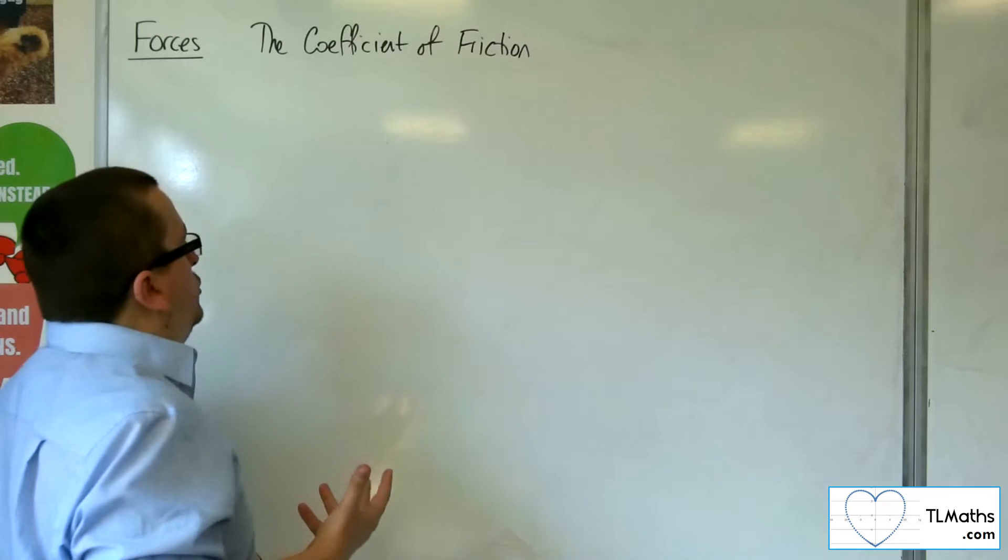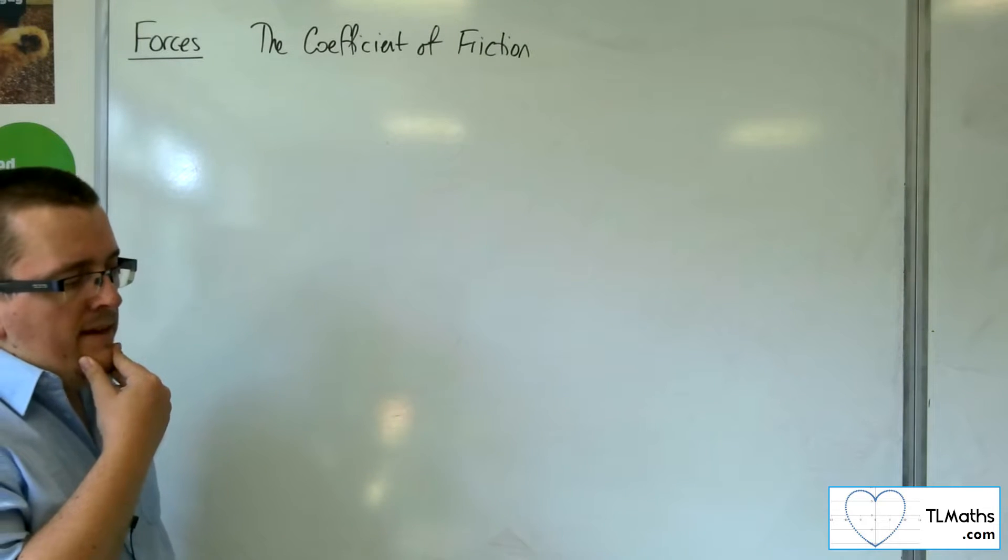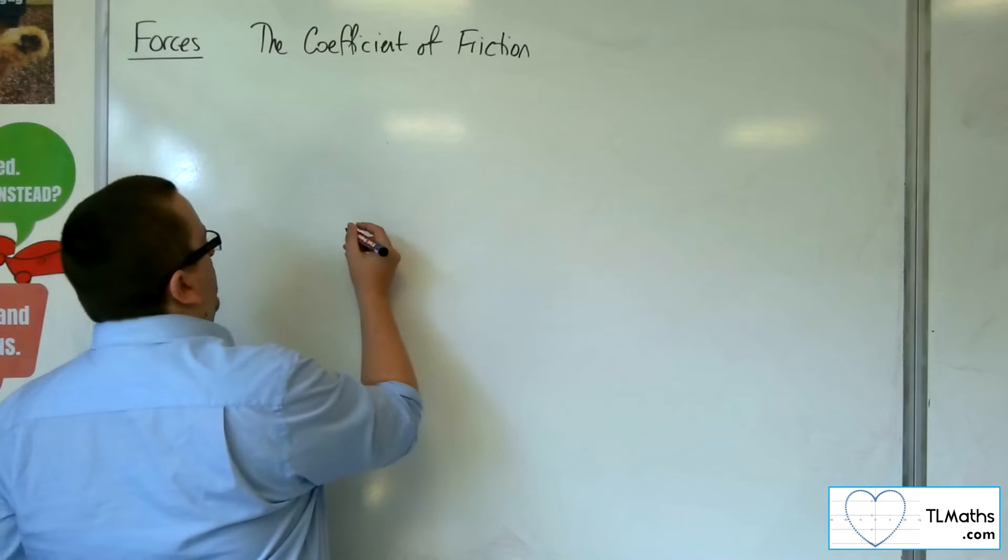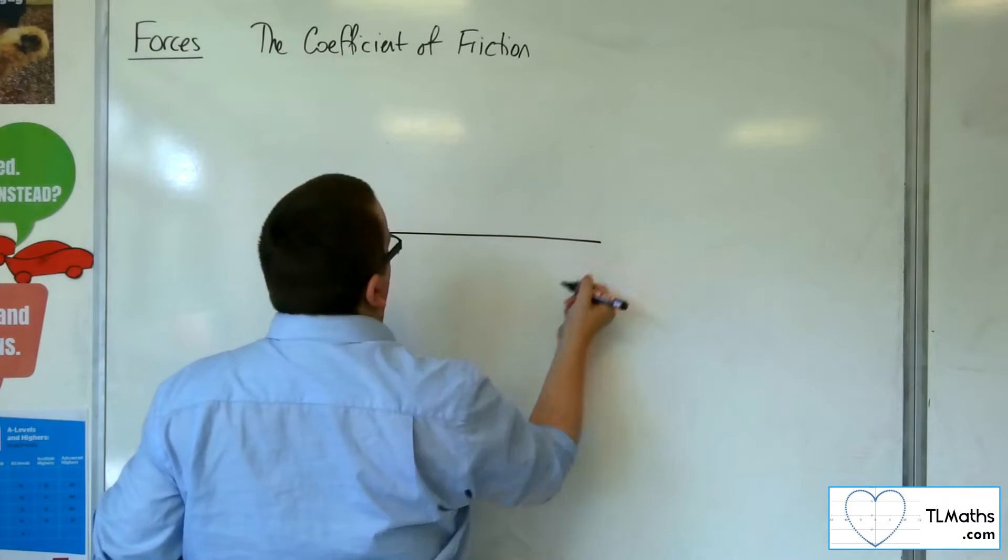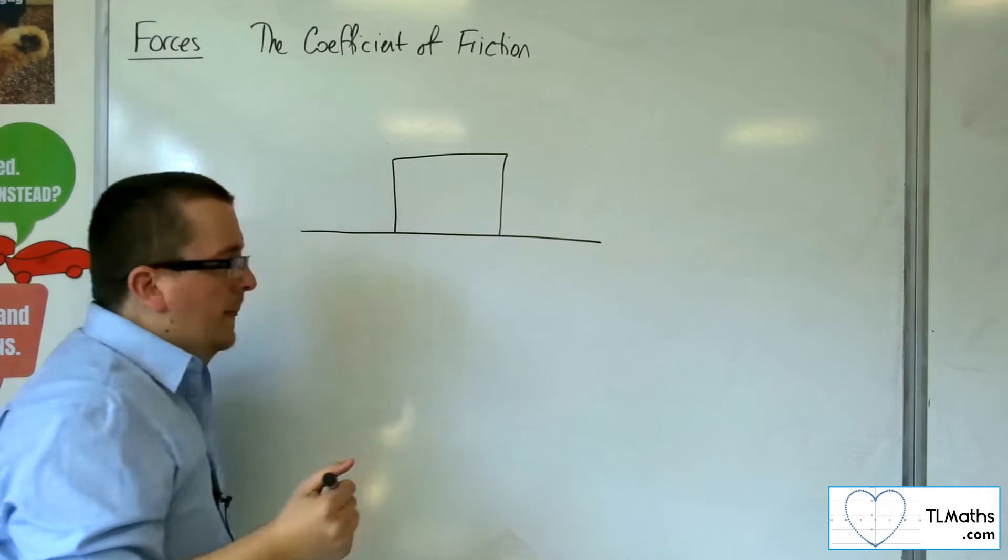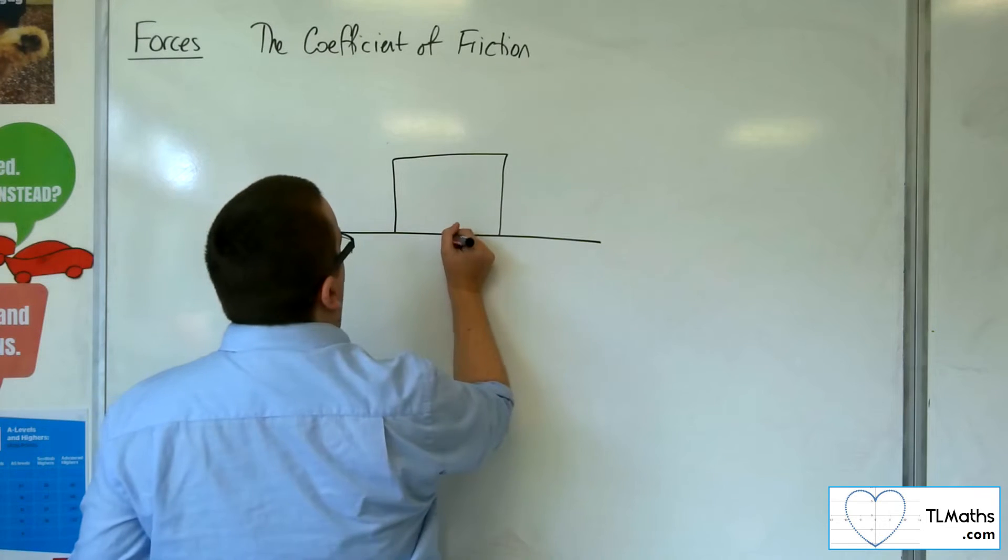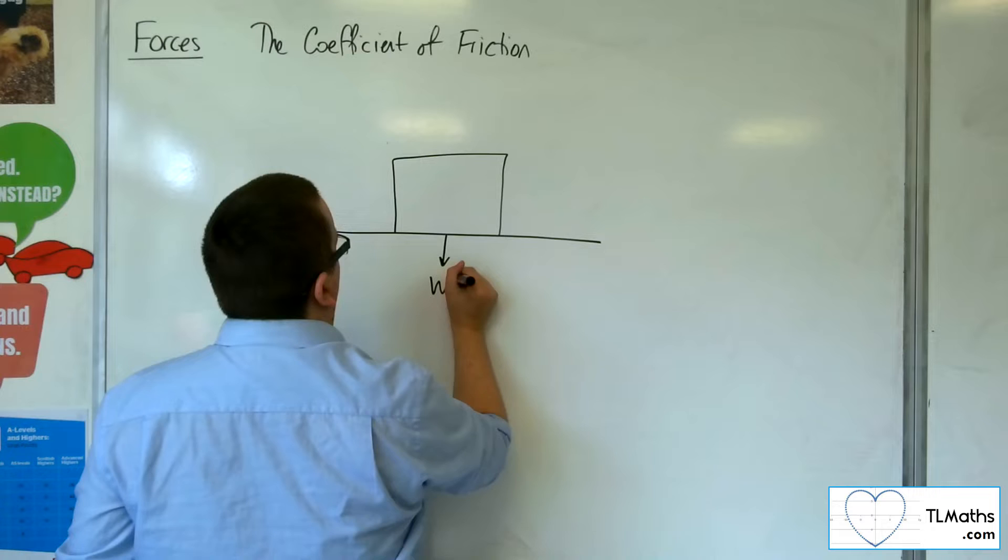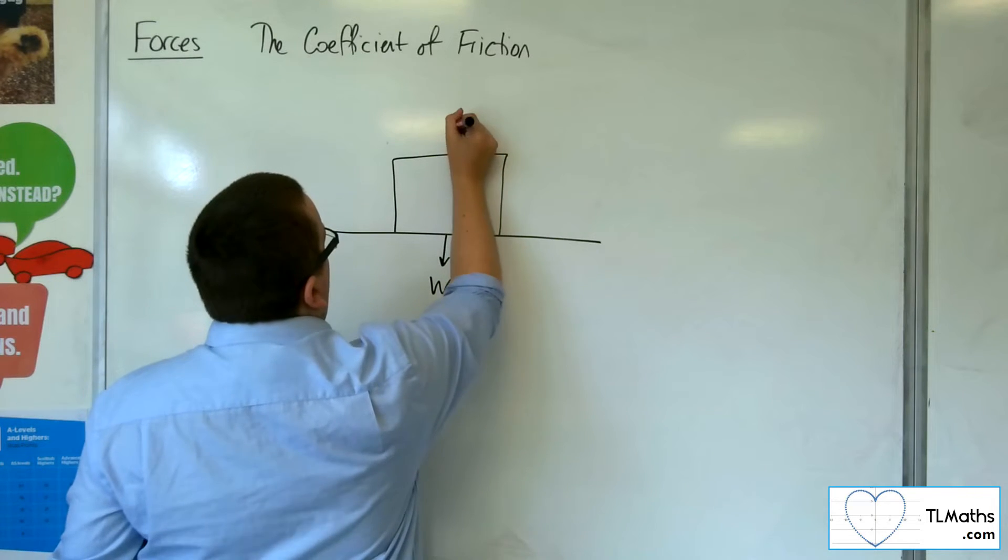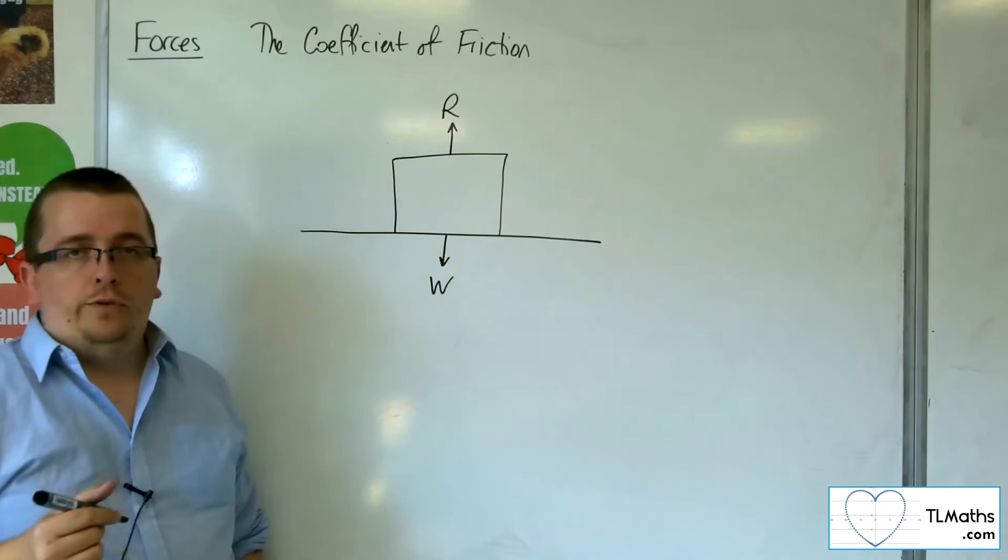Let's start from scratch with the coefficient of friction. If you've got a table, let's say the table is smooth, and you've got a box resting on the table. Then you have the weight of the box working vertically downwards, mass times gravity, and a normal reaction force R working upwards.